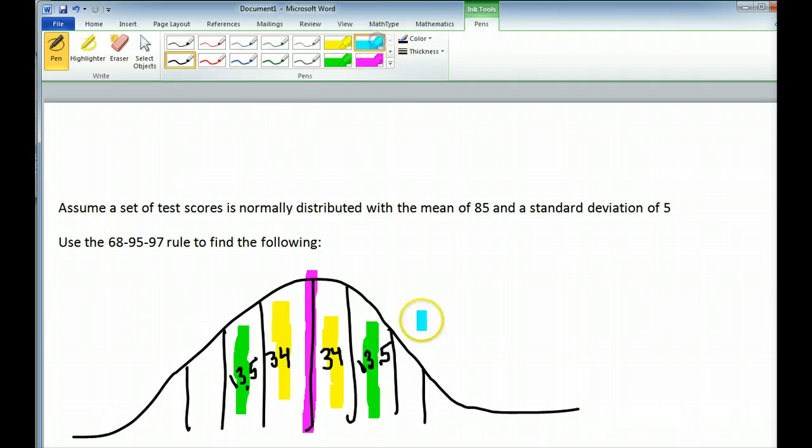Lastly, within three standard deviations of the mean we have 97% of the data. Excuse me, that's 99.7%. It helps to have all of your decimal places in there. So almost all of our data or 99.7% falls within three standard deviations of the mean.